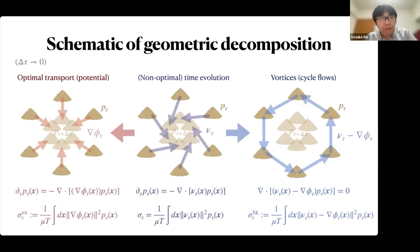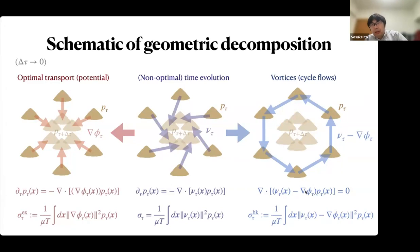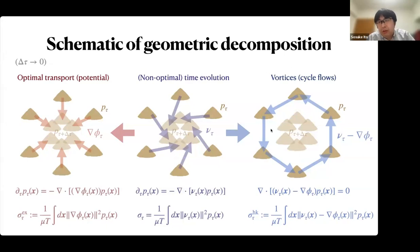This is the key figure in this talk. We consider Fokker-Planck dynamics driven by a non-conservative force, so it is not optimal. We then consider the optimal transport driven by the gradient of a potential which gives the same time evolution, and consider their difference. The difference is given by the cycle flow, because by using two inequalities we can obtain this equality equation. We can thus consider the dissipation decomposition for optimal transport and dissipation for vortex cycle flows.